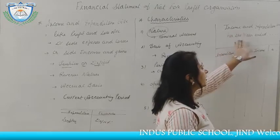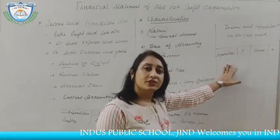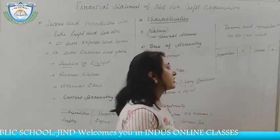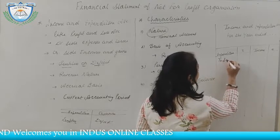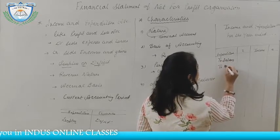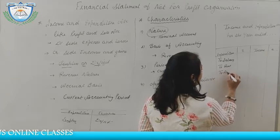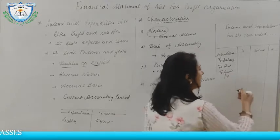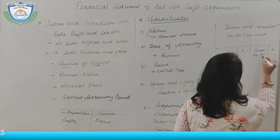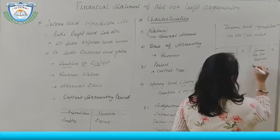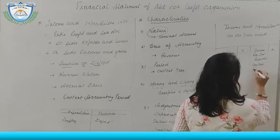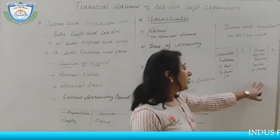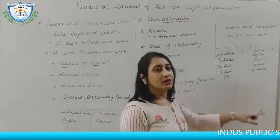The format of the Income and Expenditure Account has expenditure on the debit side and income on the credit side. For example, on the debit side there are expenses like salary, rent, and audit fee. On the credit side, incomes include interest received and sale of newspaper, among others.